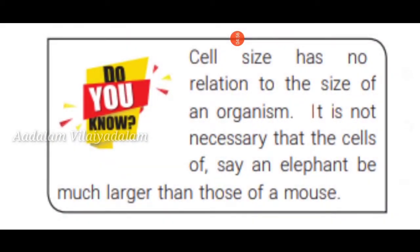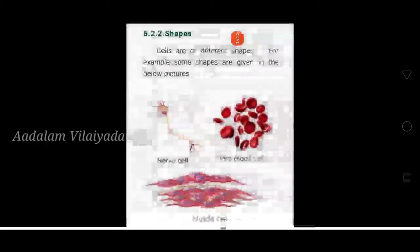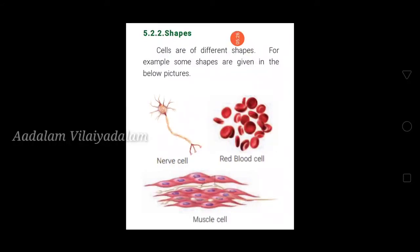An important point: cell size has no relation to the size of an organism. An elephant is a big organism, but that doesn't mean its cells are big; a mouse is small but its cells are not necessarily smaller. Cell size has no relation to organism size. Cells also come in different shapes — for example, nerve cells, red blood cells, and muscle cells all have different shapes.